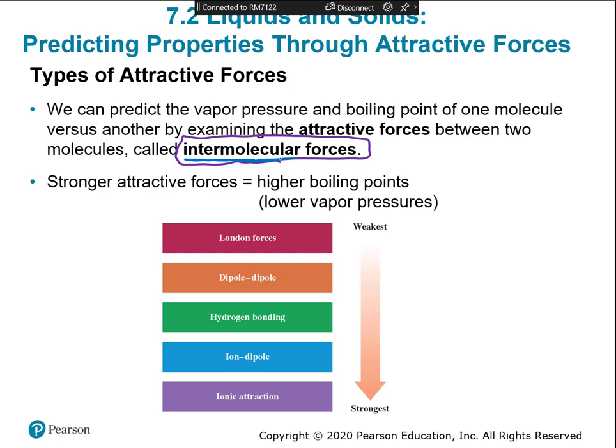The first and weakest intermolecular force is London forces. These are the only forces found in nonpolar molecules - molecules that have only carbon and hydrogen, like methane, ethane, propane, and butane. These molecules have very little attraction for each other; methane (CH4) is a gas at room temperature and is natural gas.